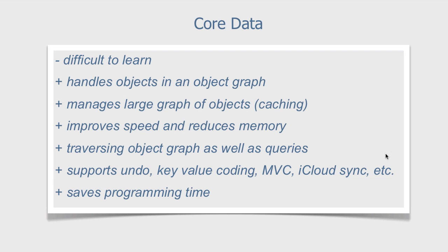Here are some characteristics of Core Data. The main disadvantage is that it is difficult to learn. But there are some advantages. First, it handles objects in an object graph. In fact, it can manage very large graphs of objects by caching in the needed objects as needed. This reduces memory need and improves speed — since we are using RAM instead of disk, we get improved speed, and since we are caching, we reduce the memory requirement.